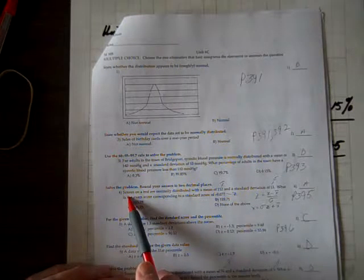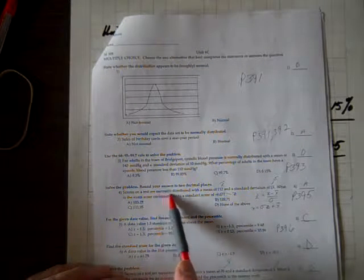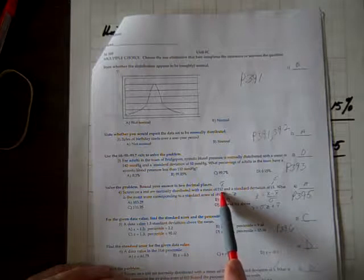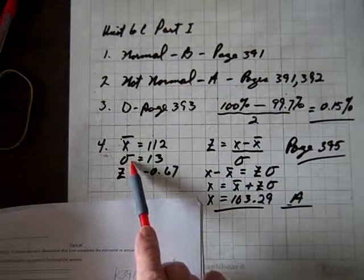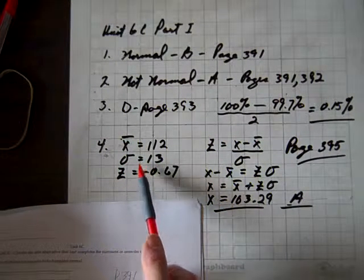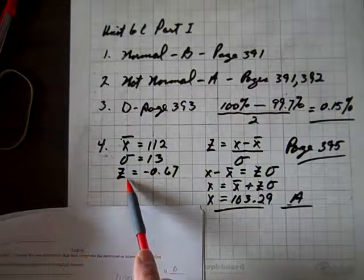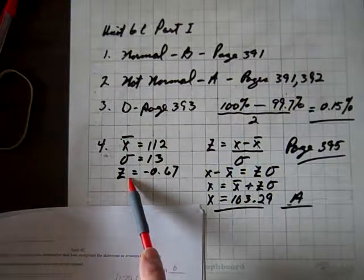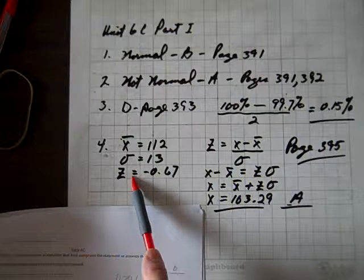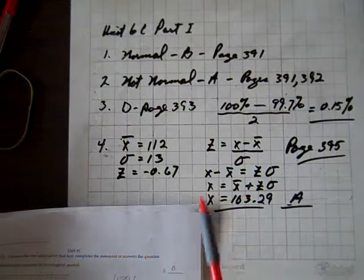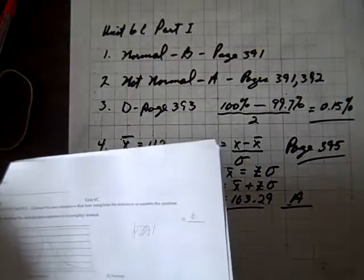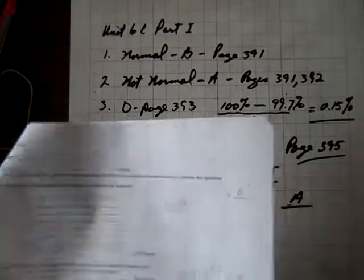Now, for four, scores on a test are normally distributed with a mean of 112, a standard deviation, that's sigma, and that's 13, and a Z of negative 0.67. Now, let me point out what's meant by Z.